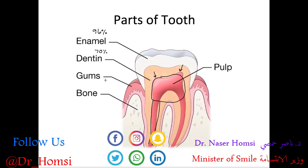Next we have the gums — the pink structures that surround a tooth — and the bone, which is about 65% mineral, slightly softer than dentin. This would be the maxilla (upper jawbone) and mandible (lower jawbone) that encase the teeth in place. The gums are sometimes also referred to as the gingiva, so those terms are synonymous.